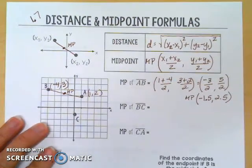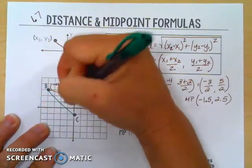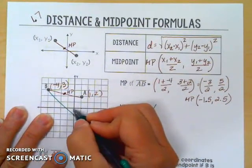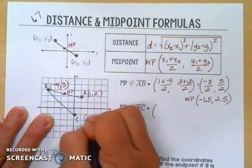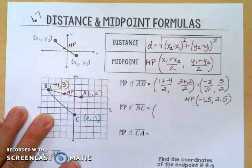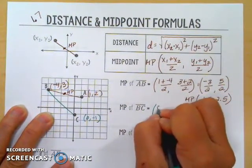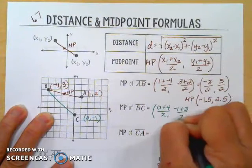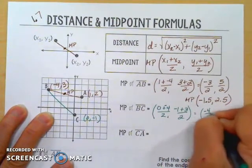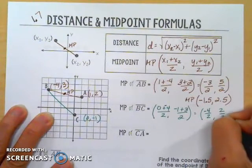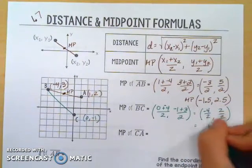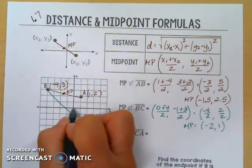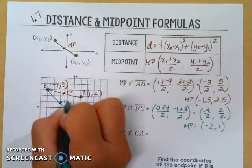Let's try it one more time with BC. If we want to find the midpoint of BC, we know it's got to be somewhere in here. C is at (0, -1) because I'm not going right or left at all, just going down 1. So taking the x values: 0 plus negative 4 divided by 2, and the y values: negative 1 plus 3 divided by 2. That gives me negative 4 divided by 2 and positive 2 divided by 2, which is negative 2 and positive 1. So the midpoint is at (-2, 1).